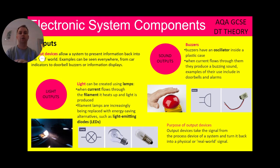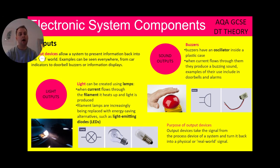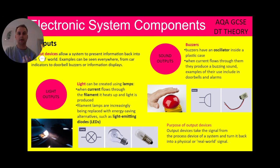Now let's look at sound. Buzzers have an oscillator inside a plastic case. When current flows through them, they produce a buzzing sound. Examples of their use include doorbells and alarms — a little bit like the motion sensor we were talking about earlier. The purpose of these output devices is they take the signal from the process device of a system and turn it back into a physical or real world signal. I keep repeating that 'real world signal' because it's super important — it's terminology that is going to help you answer those exam questions correctly.